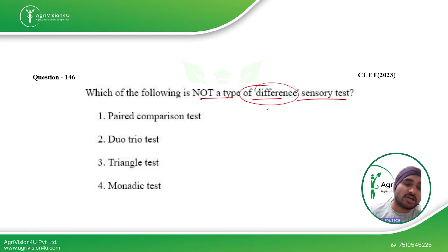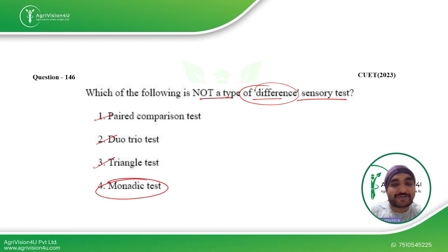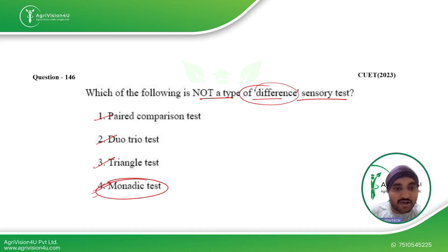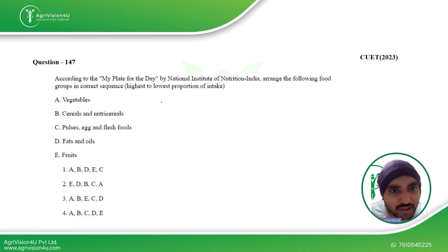Which of the following is not a type of difference sensory test? The paired comparison test, duo-trio test, and triangle test all fall under difference tests. However, the monadic test does not belong to this category — it is the odd one out — so it is the right answer for this question.